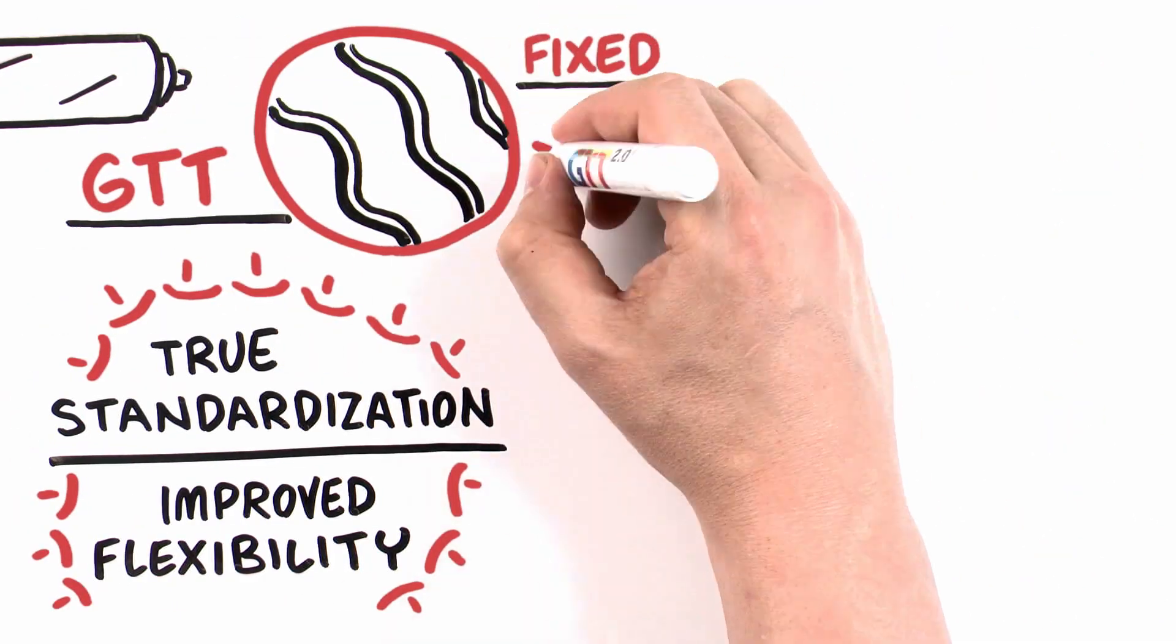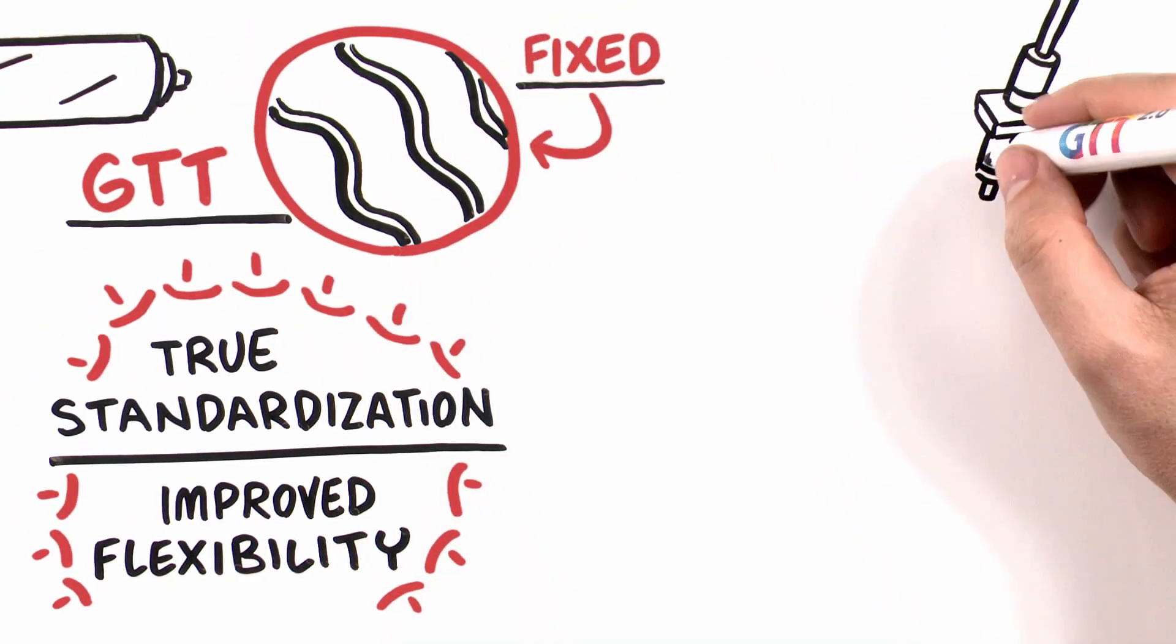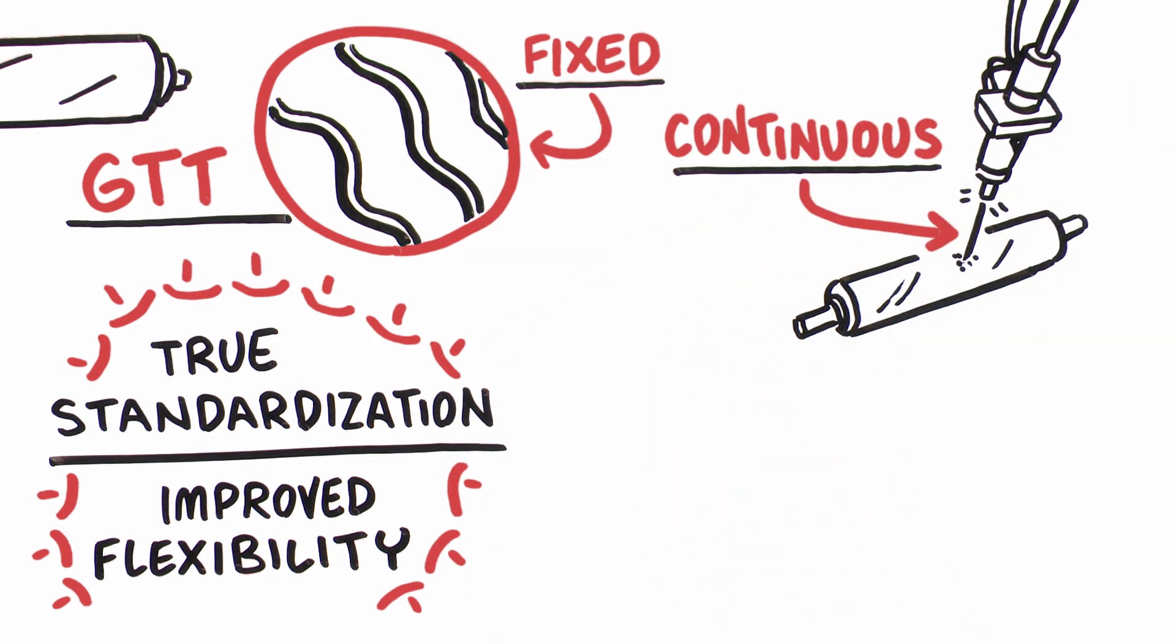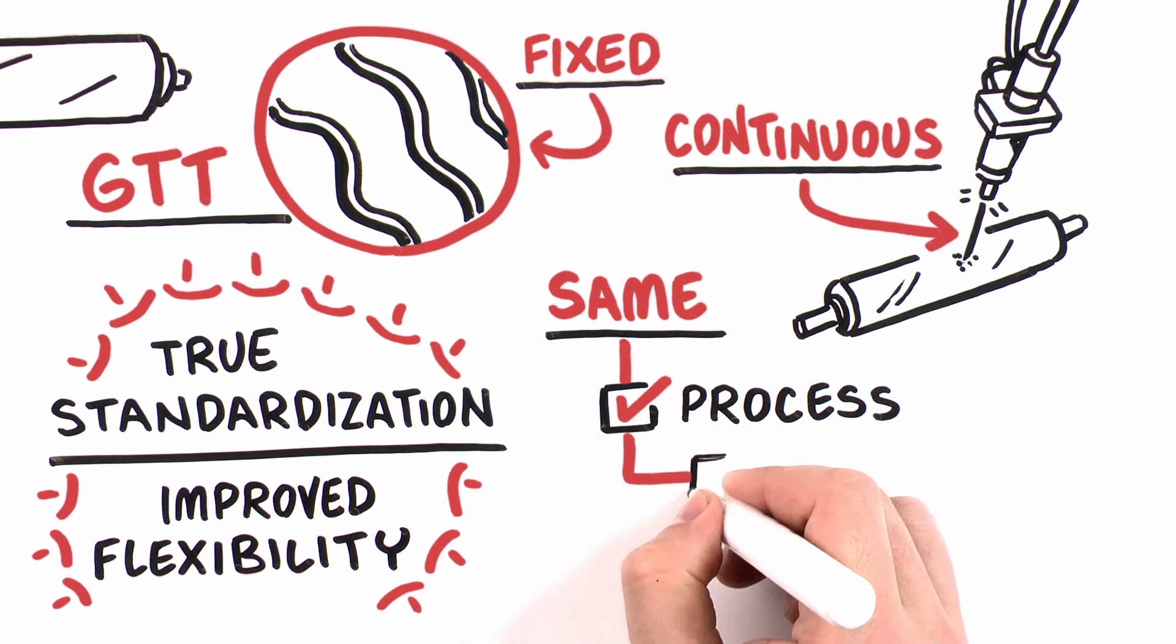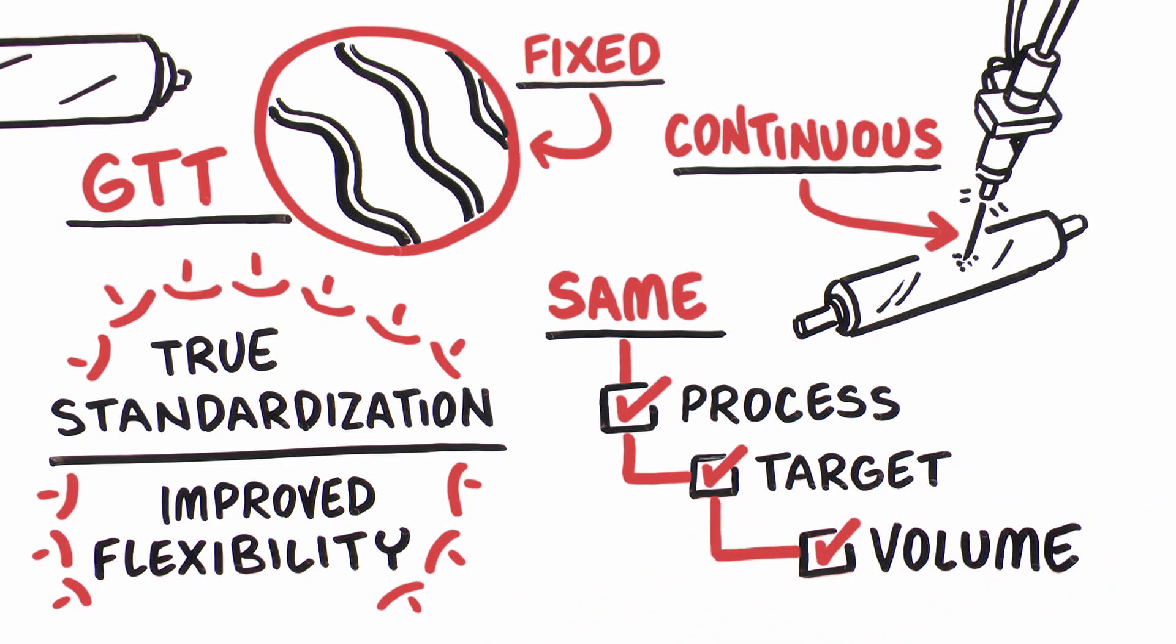Because of GTT's fixed engraving pattern and the use of a continuous laser, Apex has the same engraving process with the same target at the same volume every time, with the tightest tolerances of any analogs in the industry today.